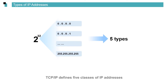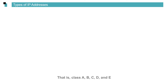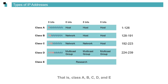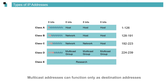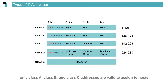TCP/IP defines five classes of IP addresses according to their address range and use: class A, B, C, D, and E. The class E address range is reserved for experimental purposes. The class D address range is used for multicast addressing. Multicast addresses can function only as destination addresses and cannot be configured for nodes. Therefore, only class A, class B, and class C addresses are valid to assign to hosts.